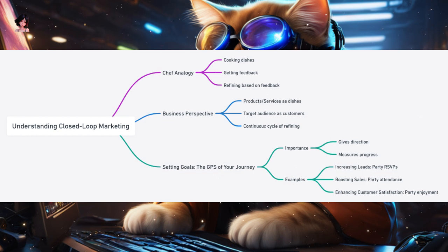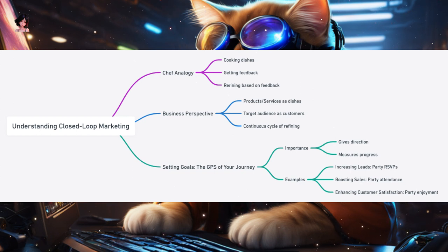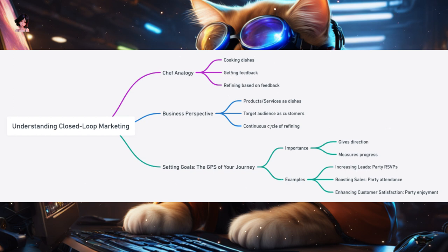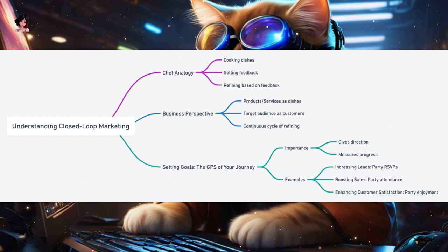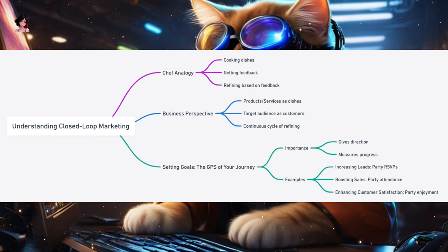But if you pay attention to what dishes are being ordered the most, which ones get returned, and actively ask for feedback, you can refine your menu to better suit your customers' tastes. This process of cooking, getting feedback, and then refining based on that feedback is similar to what businesses do with closed-loop marketing.